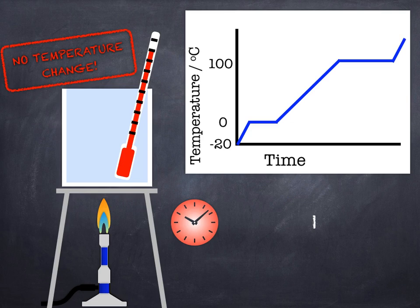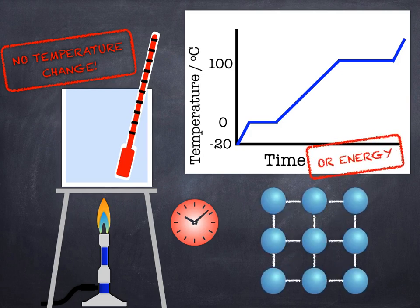Now although we have time on our x-axis in this graph, really we should have, or we could have, energy, because that's what's going on - we're adding energy to it. And normally when we add energy to something the temperature increases.